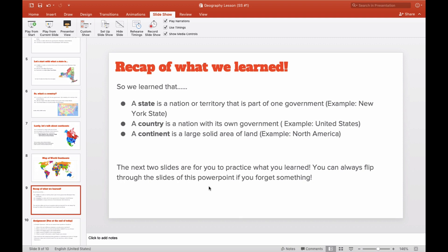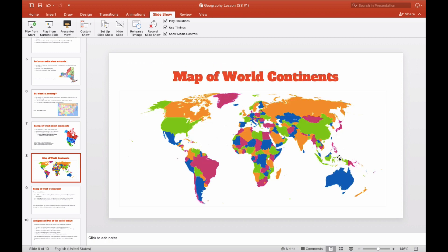So let's do a recap. We learned a state is a nation or territory that is part of one government. Like New York State. A country is a nation with its own government. For example, the United States. So the United States doesn't have any other government but its own. A continent is a large, solid area of land. For example, North America.